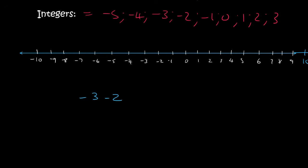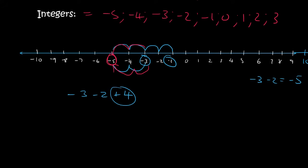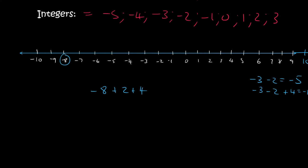Minus 3 minus 2 — so you start at minus 3 and you go 2 back, and so that's minus 5. Now, minus 3 minus 2 plus 4 — we do three steps. We start at minus 3 and minus 2, so that's 2 backwards, then you plus 4 so you go 4 forwards, and you end up at minus 1. So I went backwards first two places, then four places forward. Next, minus 8 plus 2 plus 4 — we start at minus 8, go 2 to the right, then carry on going to the right 4 more, and we end up with minus 2.